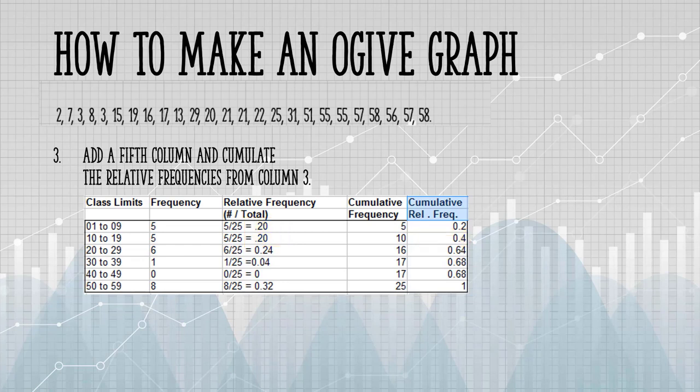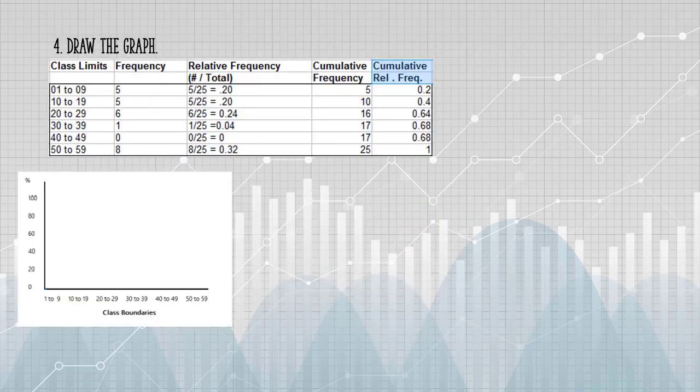Now I've drawn my table, I can create my graph. The next step is to draw a basic XY graph. I want the percent cumulative relative frequency on the y-axis. That's from 0 to 100%. And on the x-axis, I'm going to put my class boundaries, just as if I was creating a histogram.